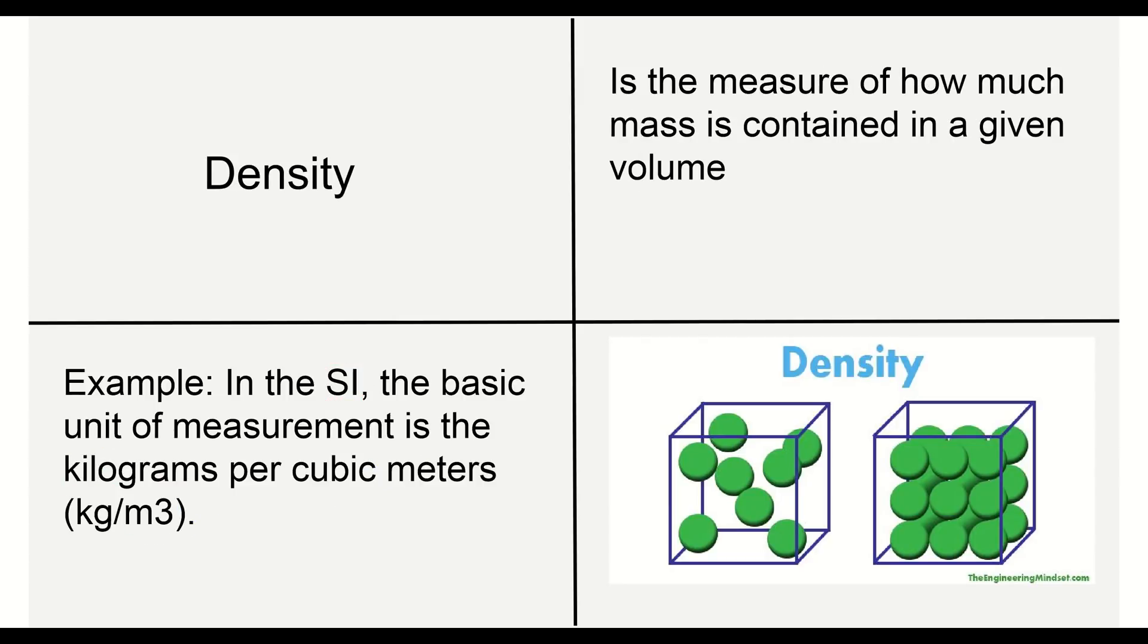Finally we have our density. Density is the measure of how much mass is contained in a given volume. The key here is our mass and our volume. We're combining both of these things. Mass is the amount of matter and volume is the amount of space it takes up. When we combine both of those things we have density. Density is looking at how tightly packed something is.